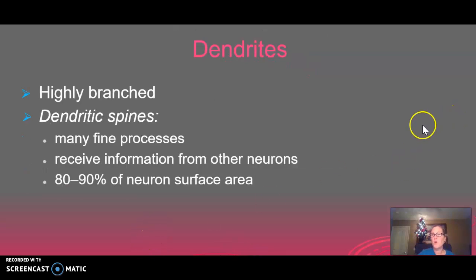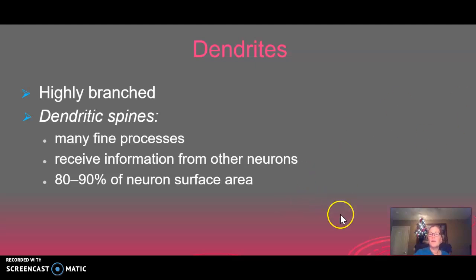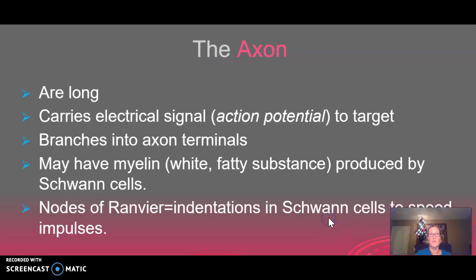The dendrites are those little projections that bring in the impulse. They're like little feelers out there waiting for a message to come from another area of the body — maybe from a sense organ, another neuron, a gland, or a muscle. They make up quite a large amount of the surface area of a neuron.